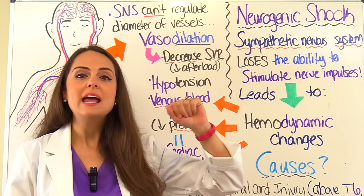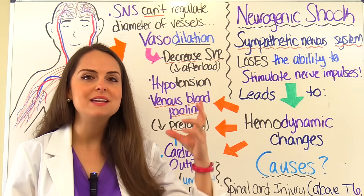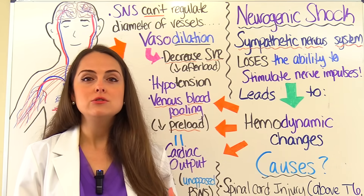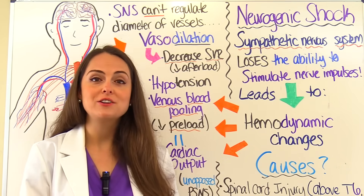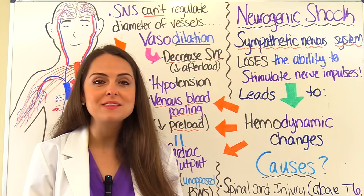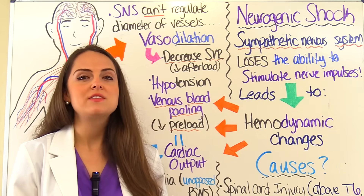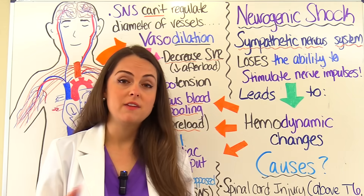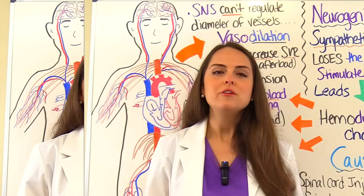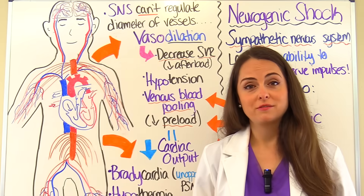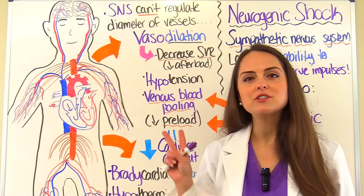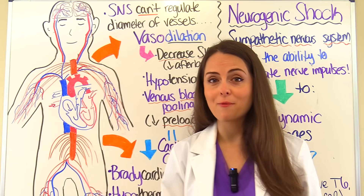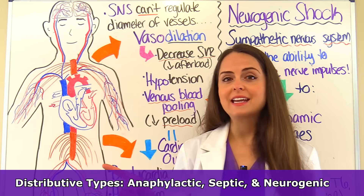Neurogenic shock is occurring due to a nervous system issue — hence why we call it neurogenic. It's occurring due to an issue with a division of the autonomic nervous system, which is the sympathetic nervous system. You can also hear neurogenic shock sometimes referred to as vasogenic shock; they're the same thing. Neurogenic shock is a form of distributive shock, and in this series we talked about two other types that are also distributive: anaphylactic and septic.